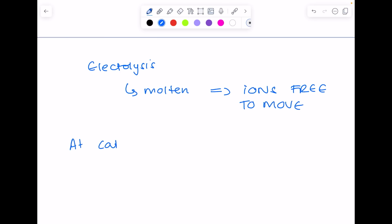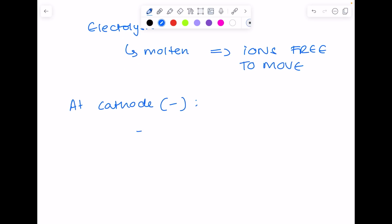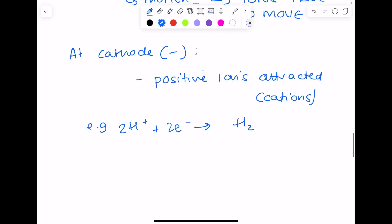Remember that at the cathode, that's the negative electrode, you'll have positive ions attracted and they are called cations. So just to show you, for example, you could have hydrogen forming hydrogen gas. Make sure you can balance that half equation by adding electrons. Because electrons have been added, you might be asked to identify the fact that this is reduction.